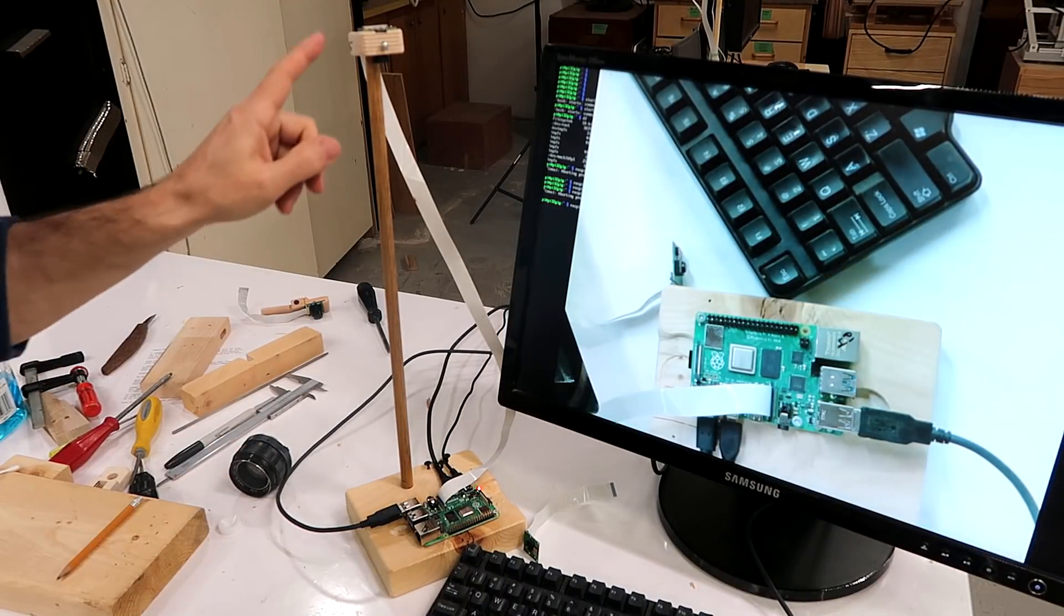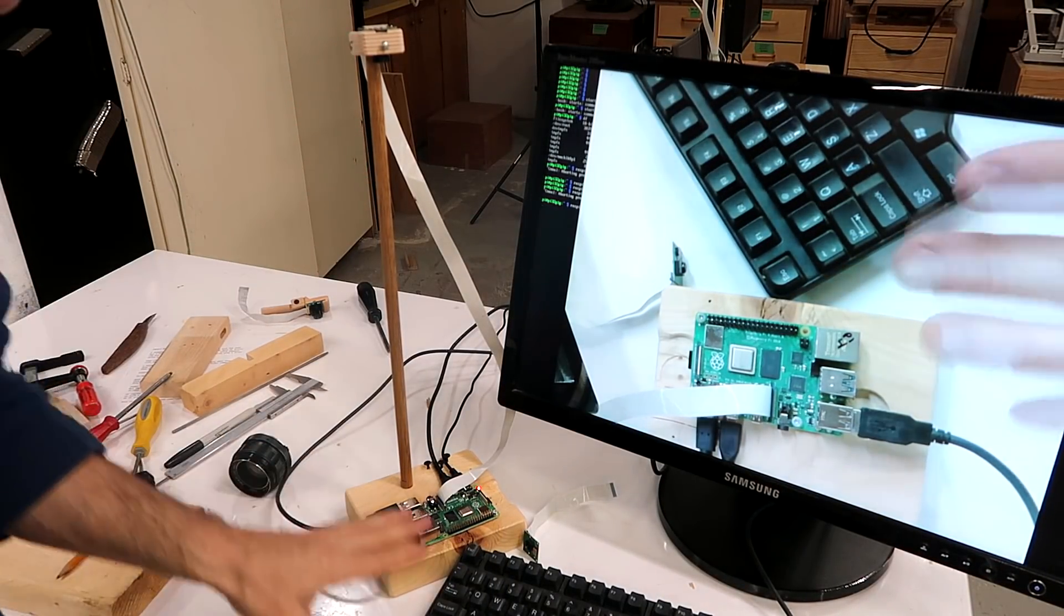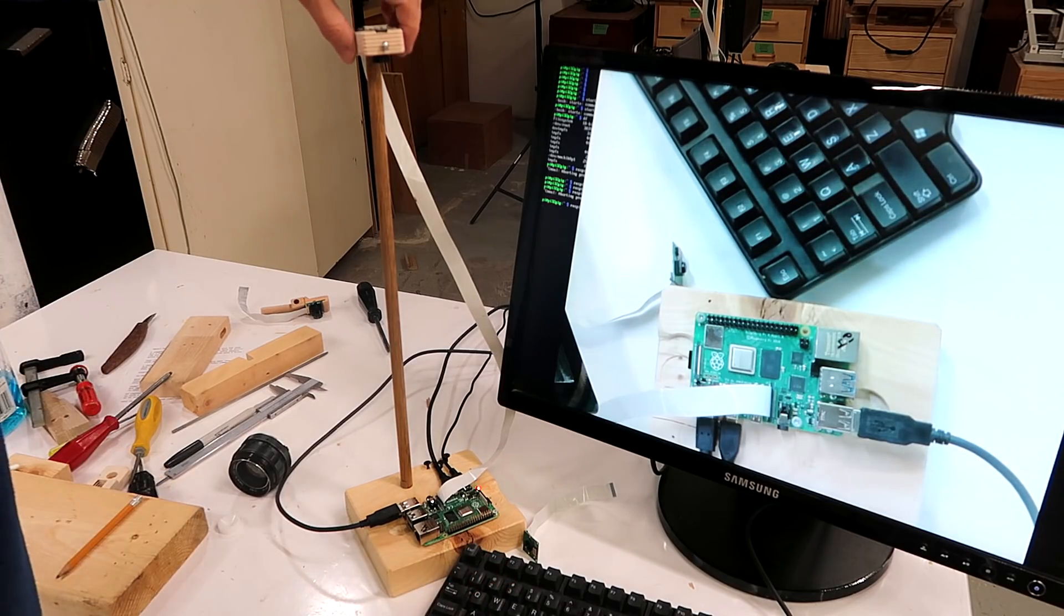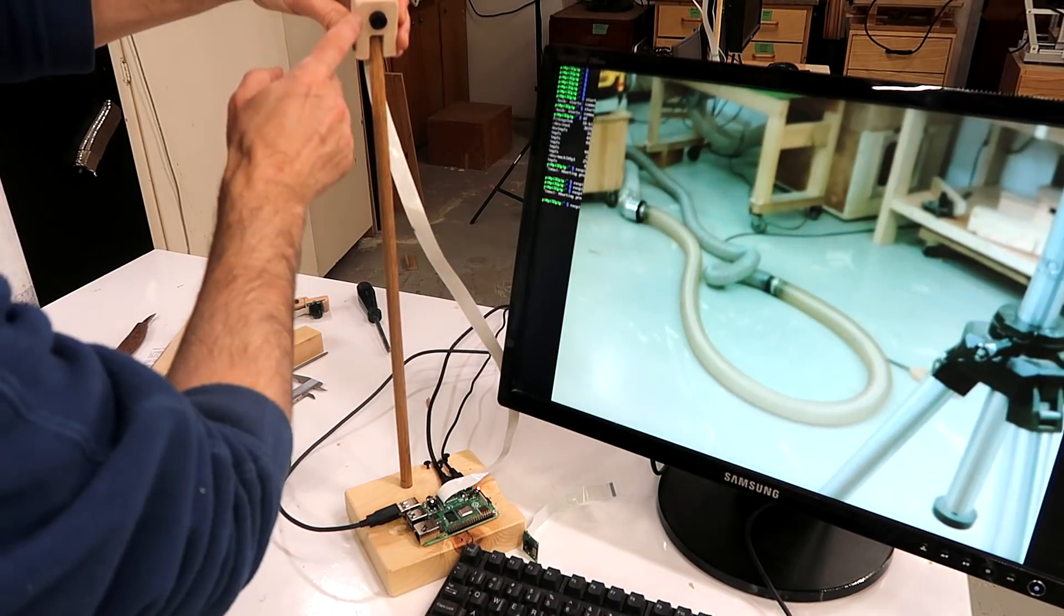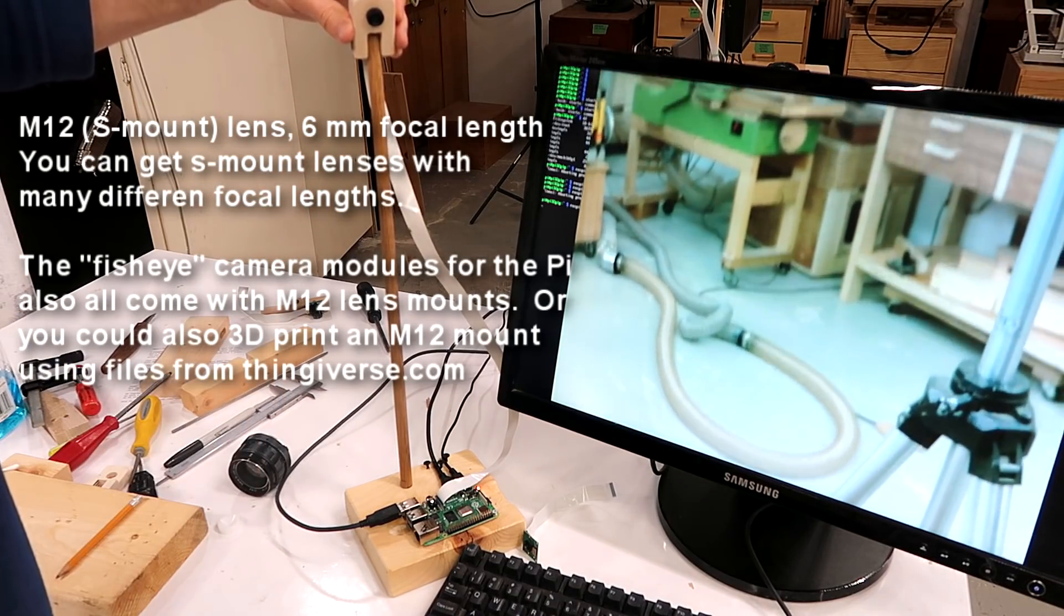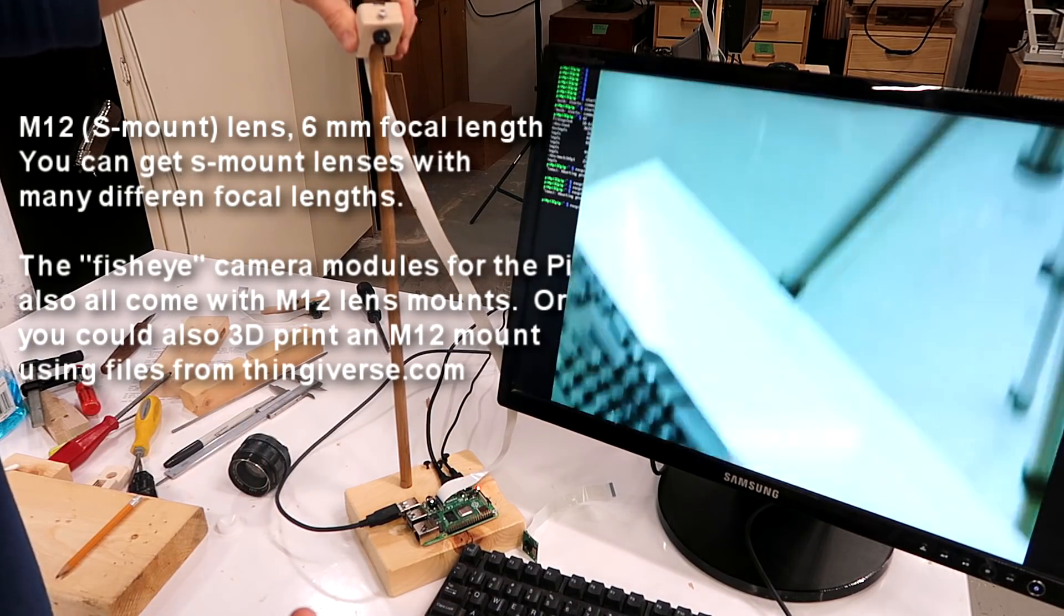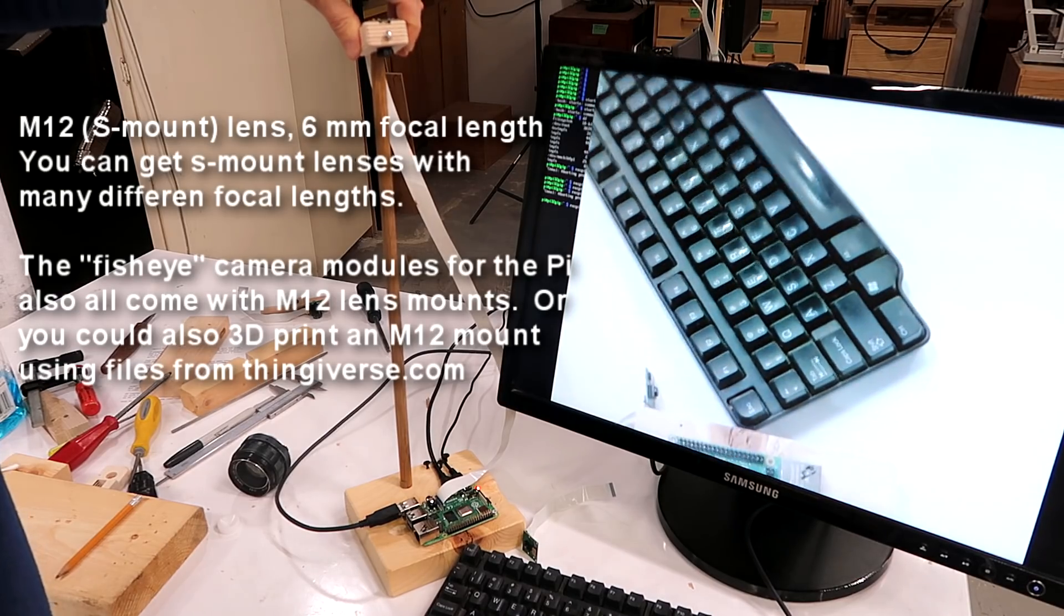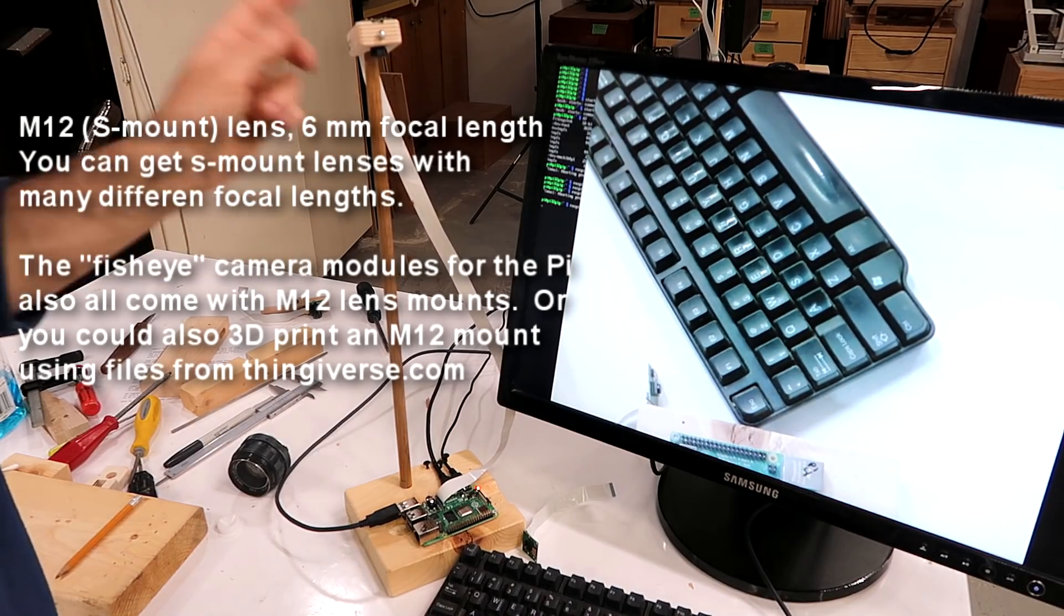But it is nice to have a lens on the Raspberry Pi that can focus very closely. And if you want to get different lenses for that, this lens here is a 12mm. I think it's called an S-mount. So you can order S-mount lenses online and these are all meant for very small sensors, and then make your own mount like this.